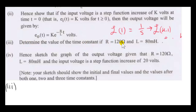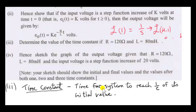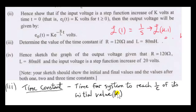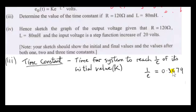Determine the value of the time constant if R is 120 ohms and L is 80 millihenries. The time constant is the time for a system to reach 1 over e of its initial value. Our system is a decaying exponential. The initial value — plugging zero in for t — gives K e to the zero, which is just K. So the initial value is K. To four decimal places, 1 over e is 0.3679, roughly 37%.